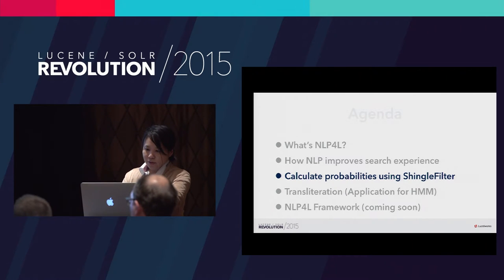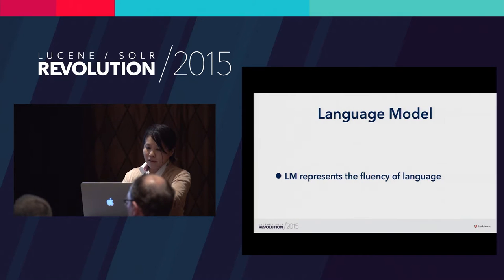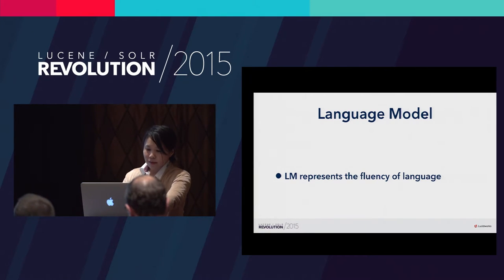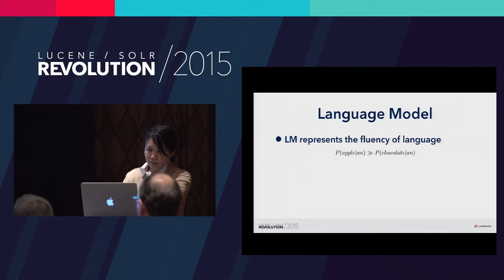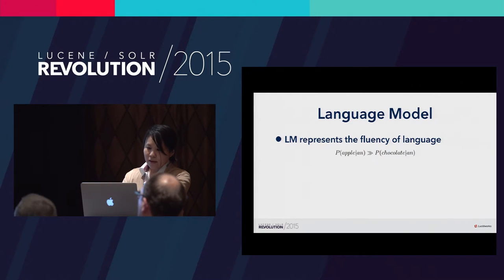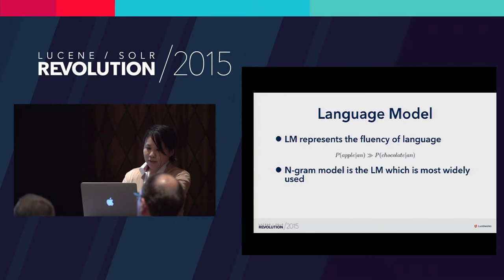Next, I'll show you how you can use the Shingling filter behind the scenes to calculate probabilities of language model and hidden Markov model. Let's look at language model. Language model is often used to represent the fluency of language. For example, in machine translation, the translator uses a language model in order to choose the most natural sentence from several candidates. This is a simple model formula — it represents a conditional probability of word 'apple' given that word 'an' has occurred. Because 'an apple' is more fluent than 'an chocolate', the probability of the left-side member is larger than the probability of the right-side member.